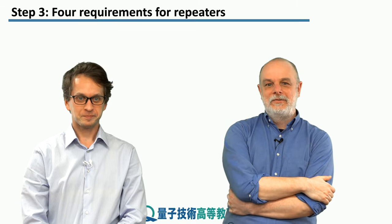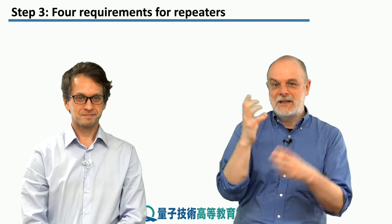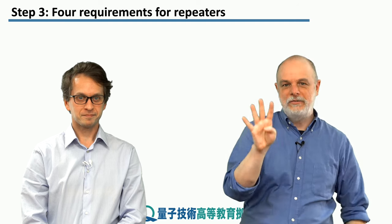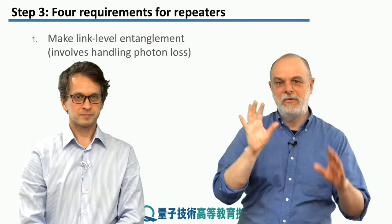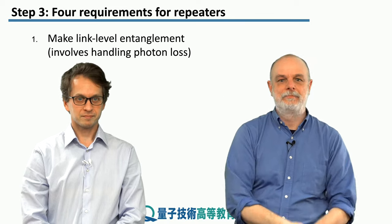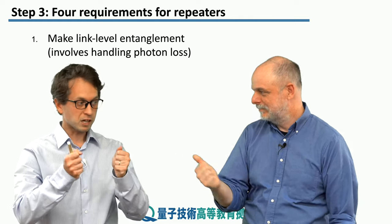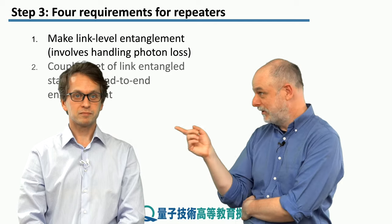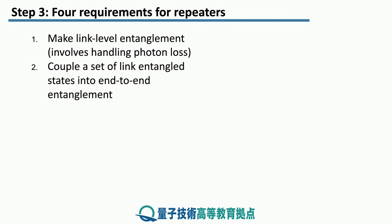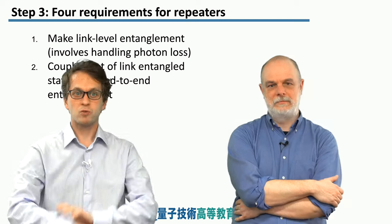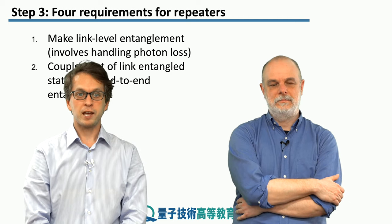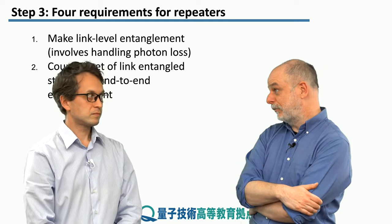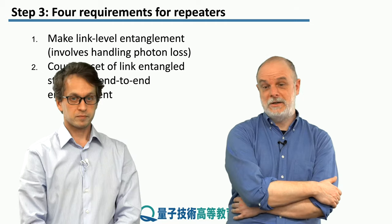Going all the way back to the core idea: there are four things that a repeater has to do, and once you have repeaters, you can build a network out of them. The first thing is to establish entanglement between two neighboring nodes — link-level entanglement — which involves handling loss of photons. The second thing is to extend this from neighboring nodes to nodes separated by a larger distance through multiple hops, establishing end-to-end entanglement. The primary mechanism for doing that is entanglement swapping.